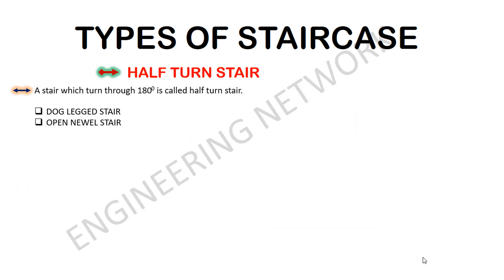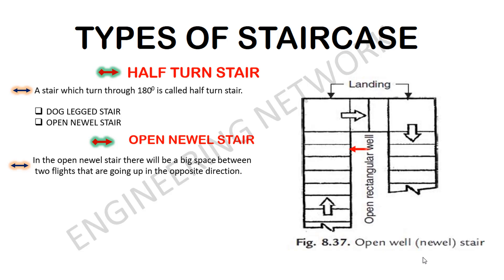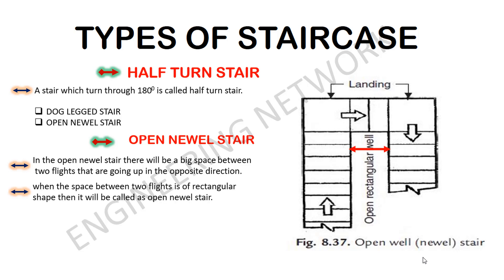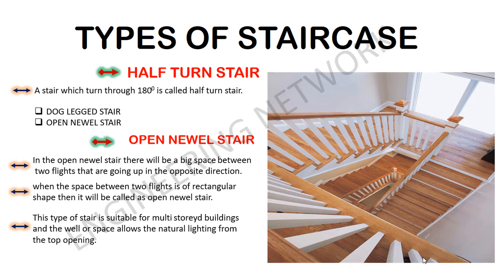The second type of half turn stair is the open Newell stair. It is almost the same as the dog-legged stair, but the main difference is that in the open Newell stair there is a large space between the two flights going up in opposite directions. It is called an open Newell stair because the space between the two flights is of rectangular shape. This type is suitable for multi-storied buildings, and the well space allows natural lighting from the top opening.